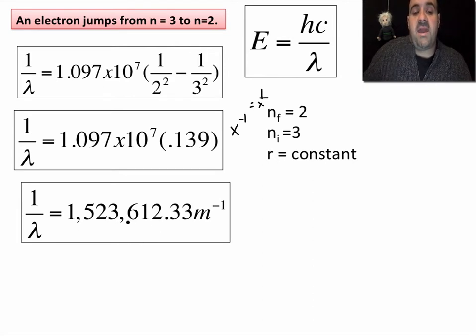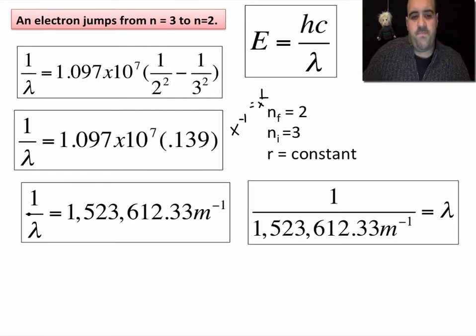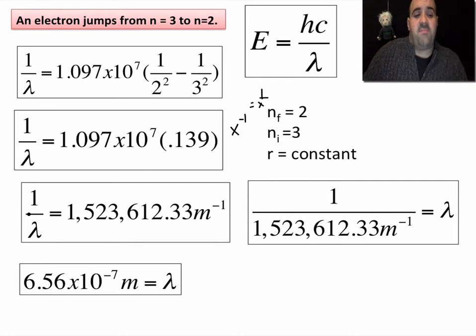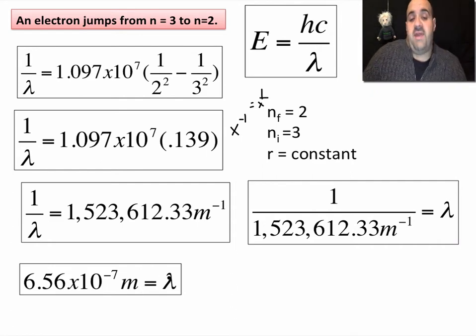All you got to do is solve for lambda. You just cross multiply. Multiply this side by that and bring that over. Lambda equals one over that number. Turns out lambda is 6.56 times 10 to the negative seventh meters. So that is the wavelength of light.